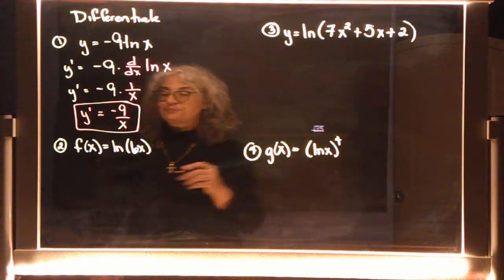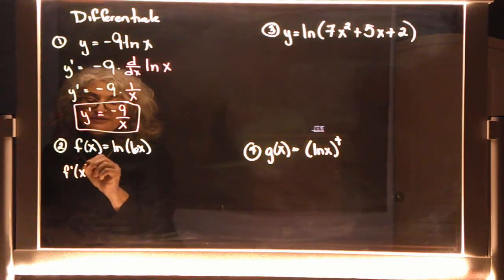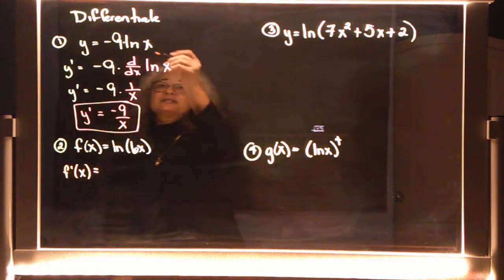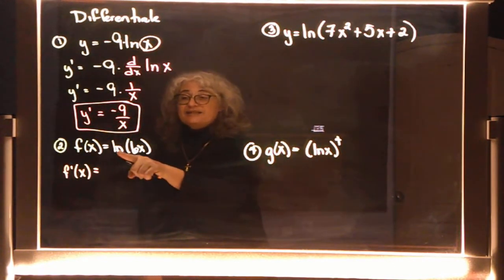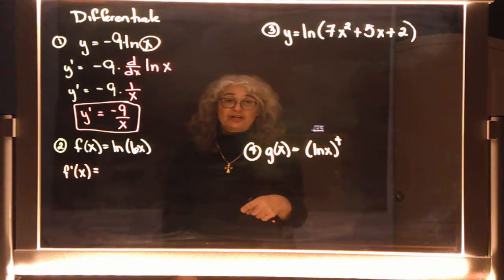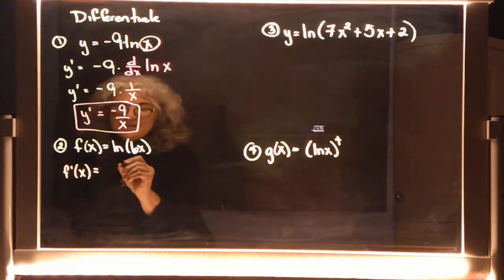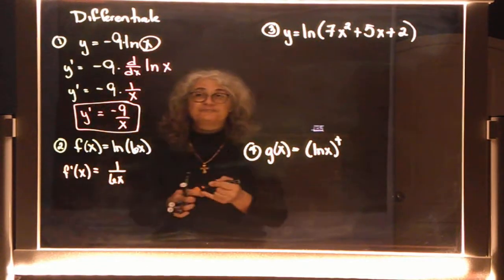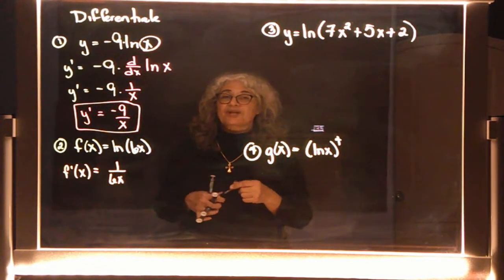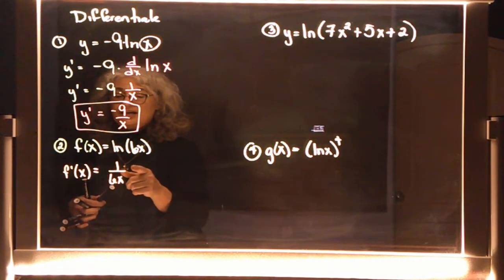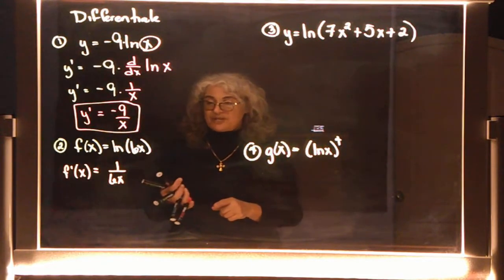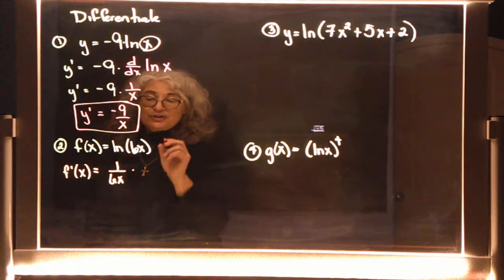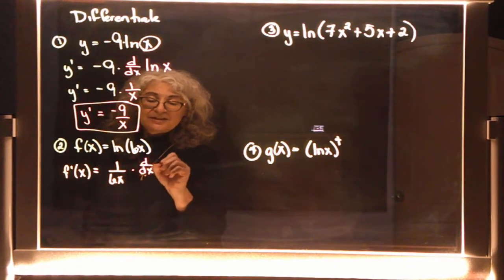Problem 2. The theorem says the derivative of ln(x) is 1 over x because this was x. But in this case, I'm not taking the natural log of x — I'm taking the natural log of 6x. So it's not 1 over x; it's 1 over 6x. But that 6x is not just x, which means we still need to find the derivative of 6x.